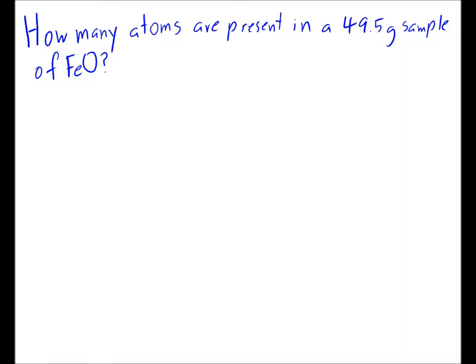So here is our problem: How many atoms are present in a 49.5 gram sample of FeO? That's iron(II) oxide. What are we asked to find? How many, specifically how many atoms? We're going to start with a mass, 49.5 grams, and we know what it's the mass of: FeO.